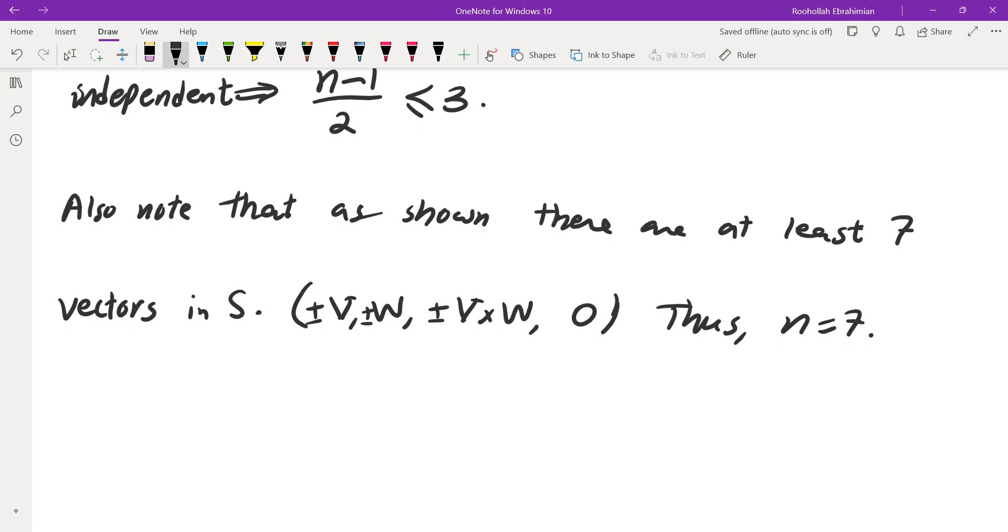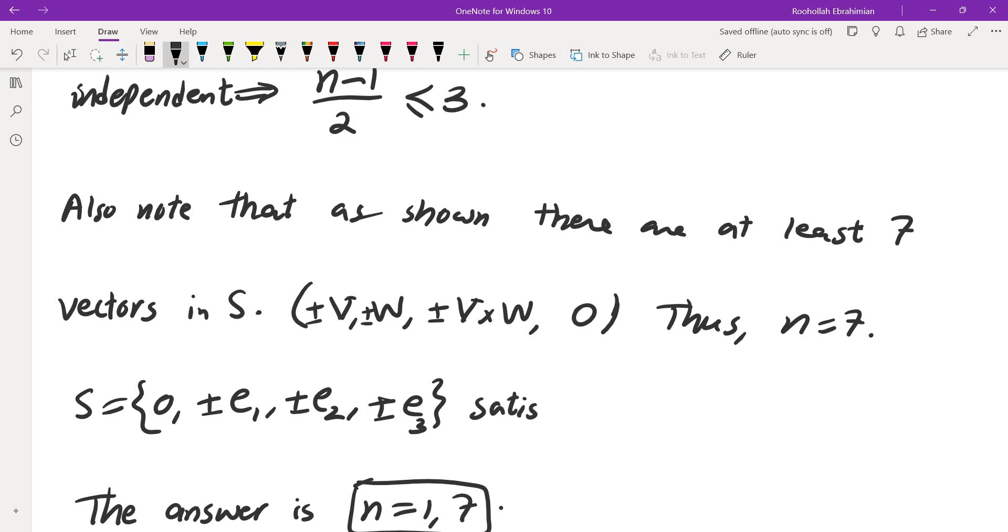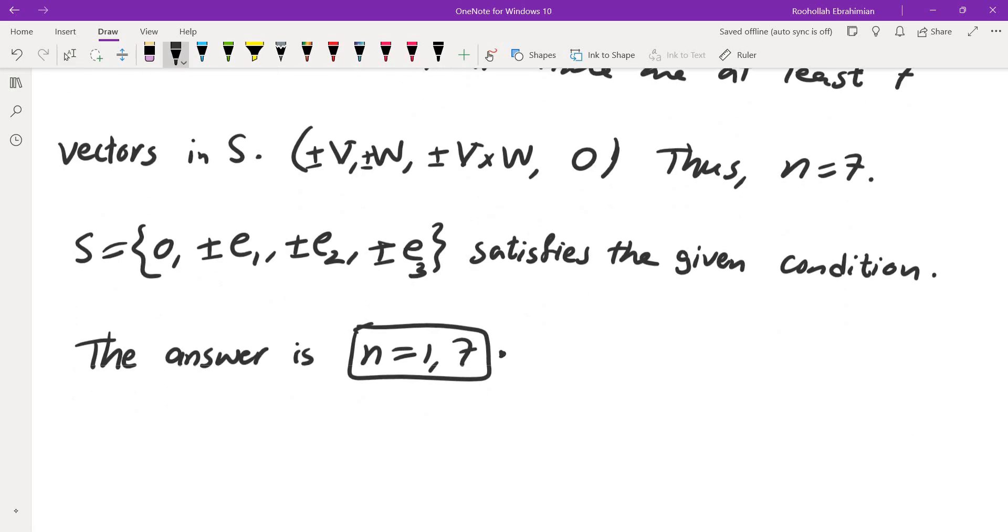So therefore, the answer is N equals one or seven. Oh, and then we do need to give an example. S equals zero plus minus E₁ plus minus E₂ plus minus E₃ satisfies the conditions. And that's fairly easy to check because E₁ is E₂ cross E₃ and so on. And that means these two are the only possible answers.